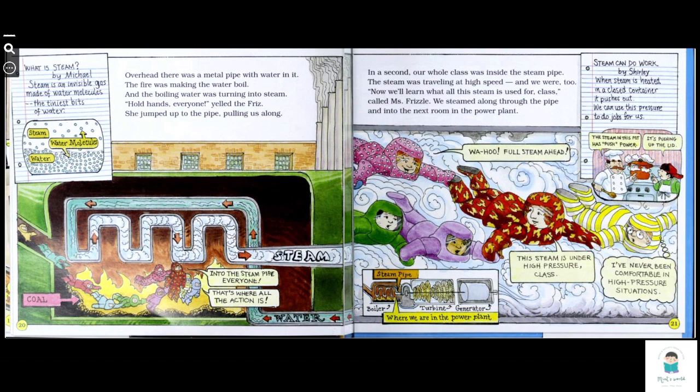Steam can do work by pressure. When steam is heated in a closed container, it pushes out. We can use this pressure to do jobs for us. The steam in this pot has push power. It's pushing up the lid. Woohoo! Full steam ahead! This steam is under high pressure, class. I've never been comfortable in high pressure situations.